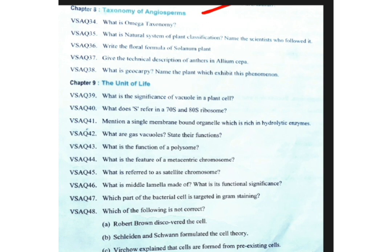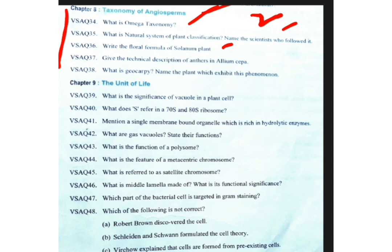The eighth chapter is very important — from here two very short answers will be coming. No one should leave the very short answers of the eighth chapter. Topics include: what is omega taxonomy, the natural system of plant classification proposed by Bentham and Hooker using morphological natural characters, the floral formula of Solanum plant, anther description of Allium cepa from the Liliaceae family, and the significance of numerical taxonomy.